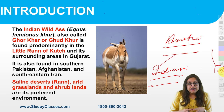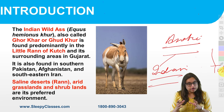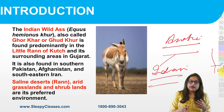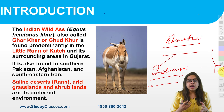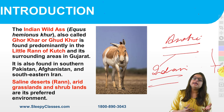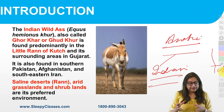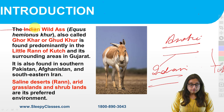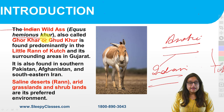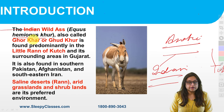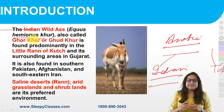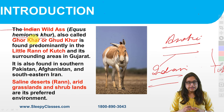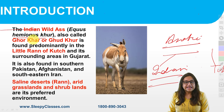In India, the Indian Wild Ass is found in the Little Rann of Kutch, but if we look outside India, you will find it in Pakistan, Afghanistan, and even south-eastern Iran. When we talk about Indian Wild Ass, the scientific name is Equus hemionus khur. Equus hemionus is the scientific name of Asiatic Wild Ass.